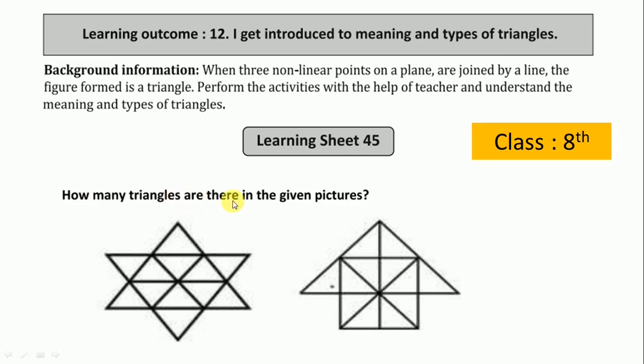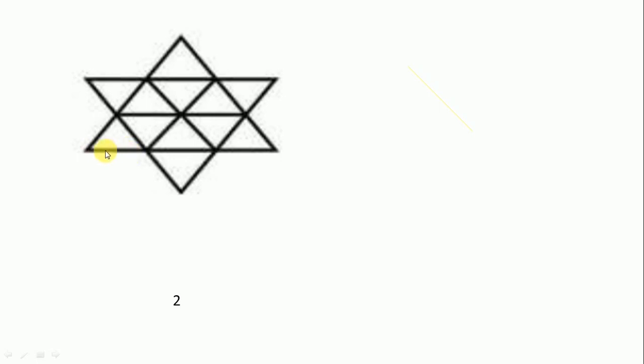How many triangles are there in the given picture? We see this picture in a separate page. We consider this distance 1 cm. So 1 cm triangles are 1, 2, 3, 4, 5, 6, 7, 8, 9, 10, and this is 11 and 12. So 1 cm triangles are 12. We write here 12.